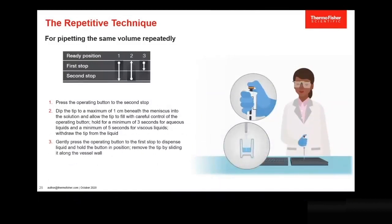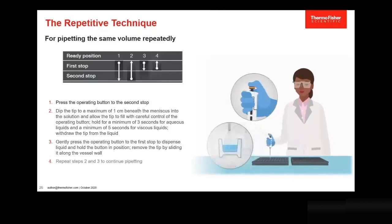Gently press the operating button to the first stop to dispense the liquid and hold the button in position. Remove the tip by sliding it along the vessel wall. Repeat steps two and three to continue pipetting.